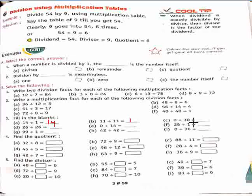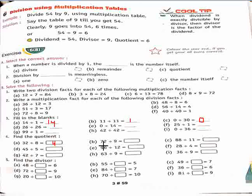Now Part C: 0 divided by 30 — the answer is 0. Similarly, you have to solve the other parts of this question. Now comes question number 4: find the quotient. Part A: 32 divided by 8. So 32 divided by 8 is 4, and we write 4 in the box. Part B: 72 divided by 9 — so 8 is our answer.